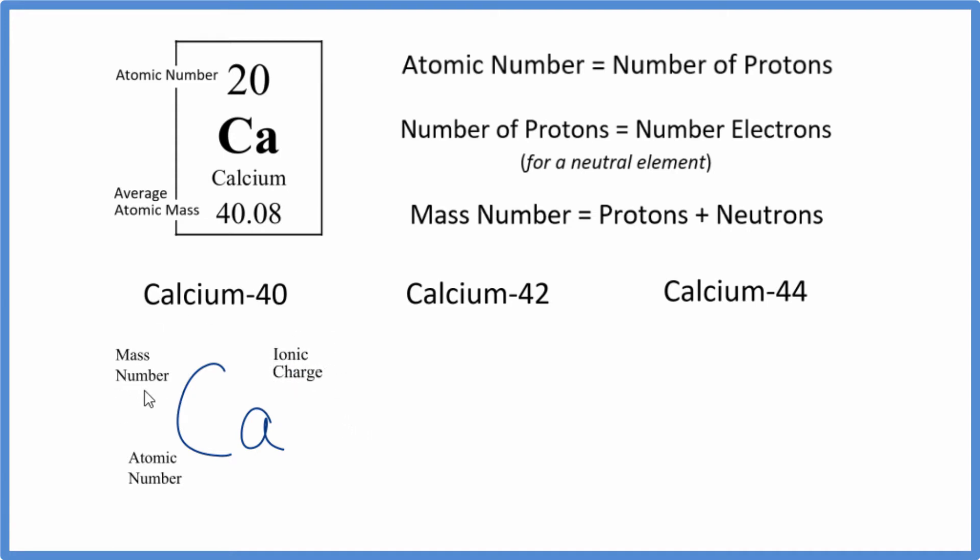So let's start with the mass number. We know the mass number here. That's this number right here, calcium-40. So we can just write 40 in for the mass number. The atomic number we find from the periodic table. Here's our atomic number, and that's going to be 20. And that's 20 for all isotopes of calcium.